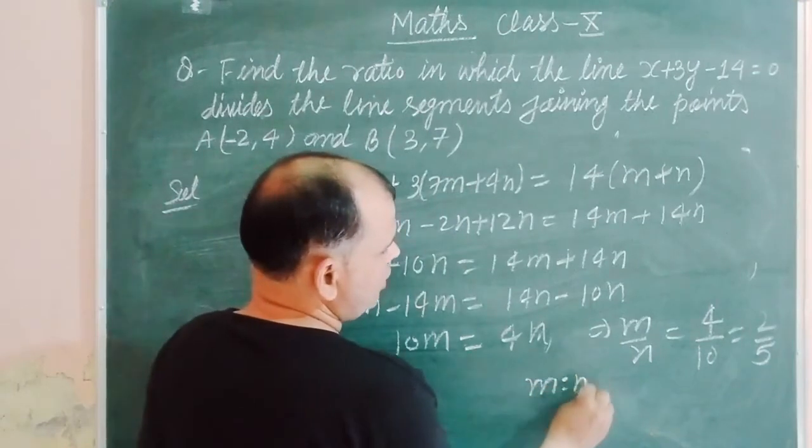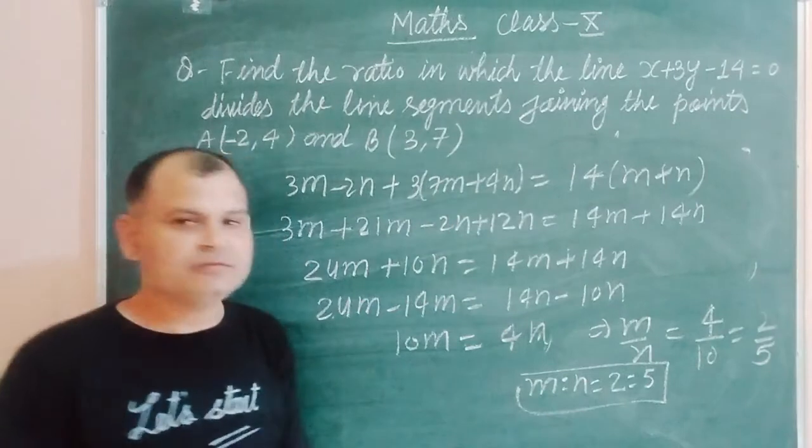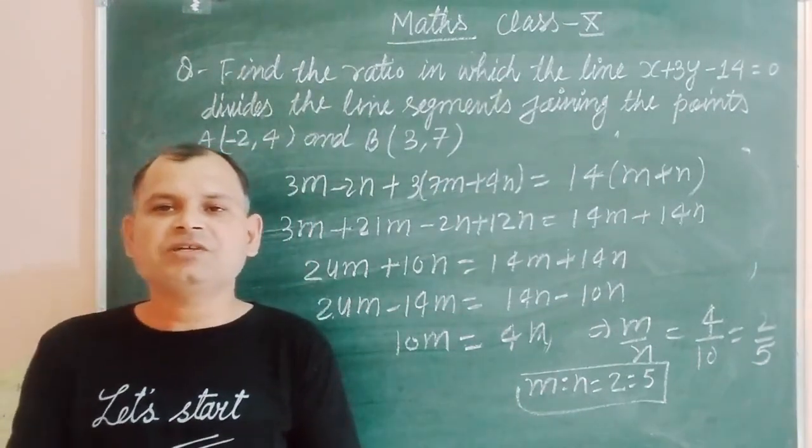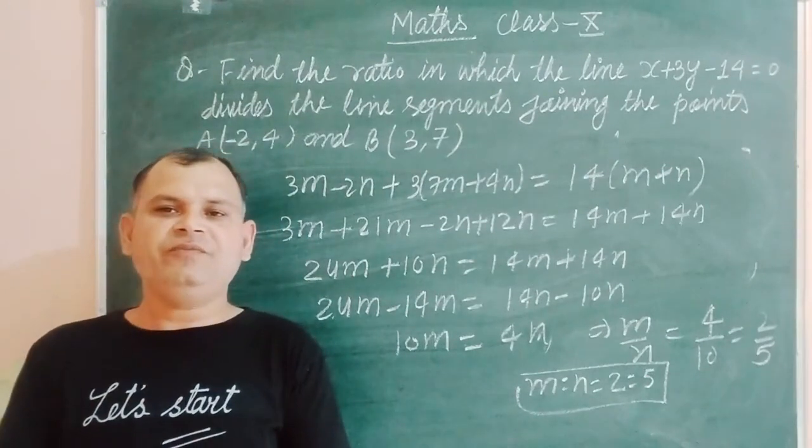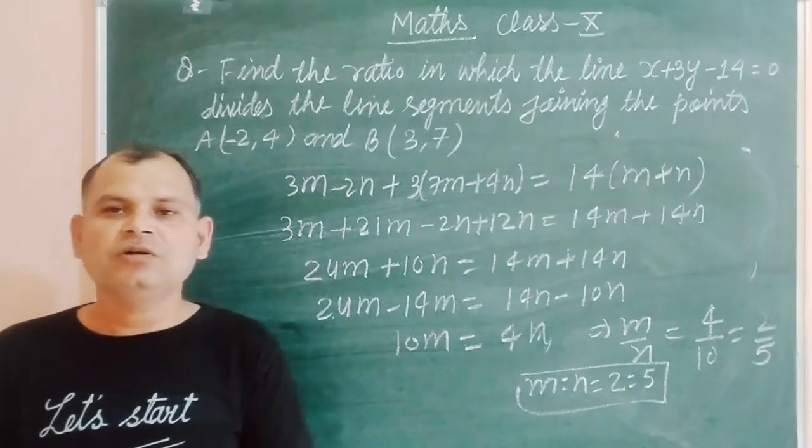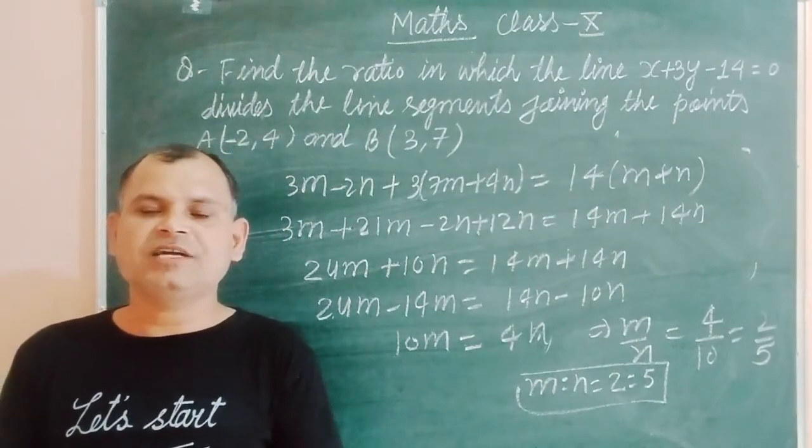Therefore m ratio n equals 2 ratio 5. So this is our answer. I hope you got it. If you have any query please comment me in the comment box. If you like my video please subscribe my channel, share it to your friend, and also make comments for making it more better. Thanks for watching, thank you.